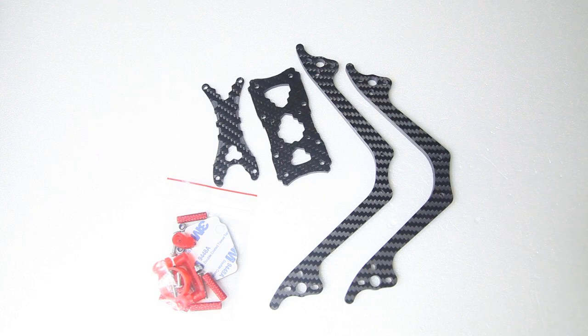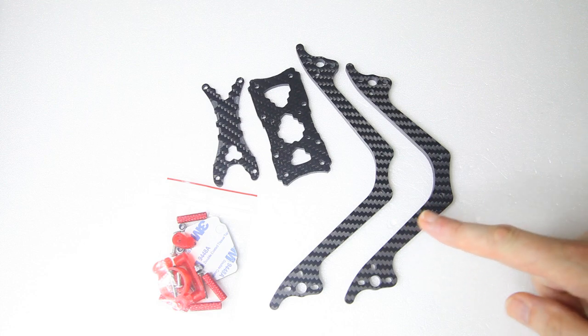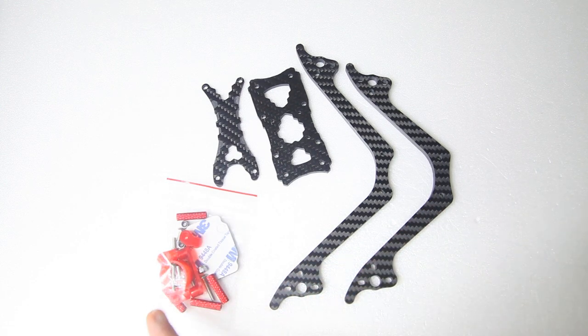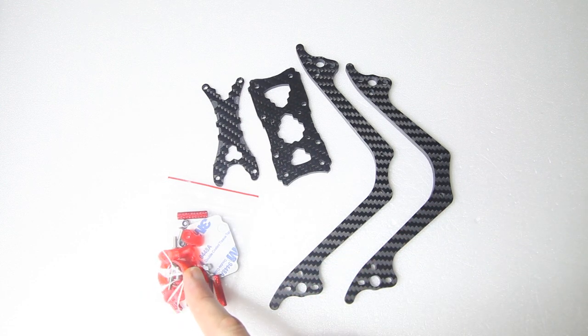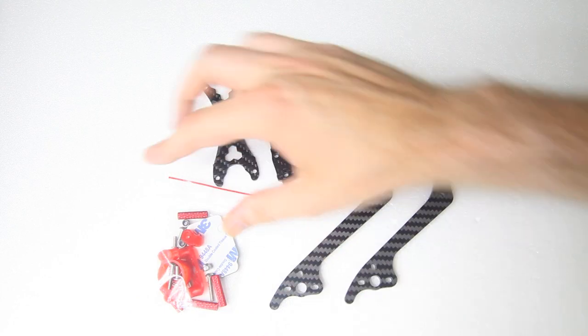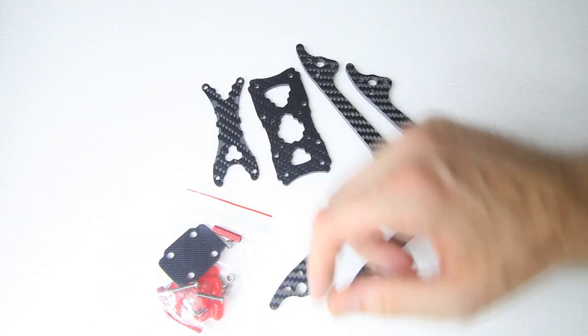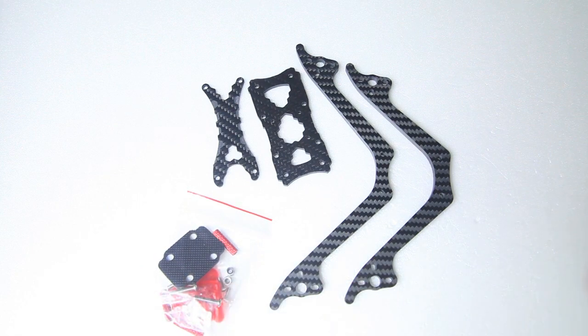You get a bag with an anti-skid pad for your battery and a few antenna mounts from the looks of it. Some camera mounts and standoffs and screws of course. So this frame does not come with a battery strap.